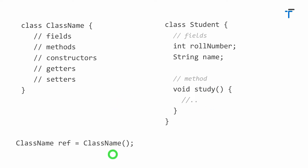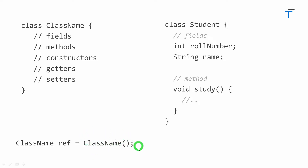Let's look at the syntax for creating an object. We have to specify the class name, then a reference name equals the class name along with a pair of parentheses. The class name with parentheses that we specify here is actually the constructor. From Dart 2, it is optional to specify the 'new' keyword while creating an object.